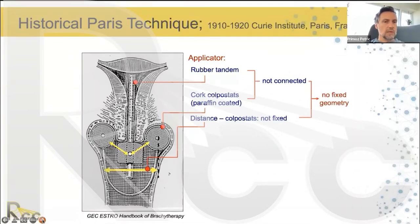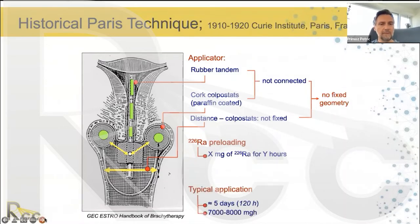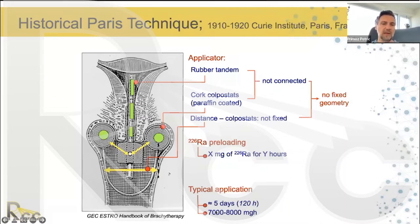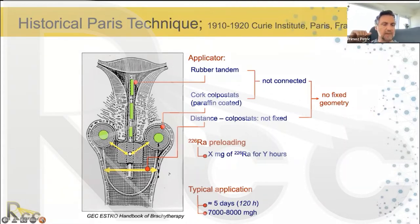These historical applicators had no fixed geometry, which is not a characteristic of modern applicators. The applicator was loaded with radium-226, and a certain amount of radium was left in place for a certain number of hours to arrive at the typical application described in terms of milligram hours of radium. Around 120 hours would produce typically 7,000 to 8,000 milligram hours of radium. These units of milligram hours still remain relevant nowadays, converted to SI units, but with a link to this historical tradition.